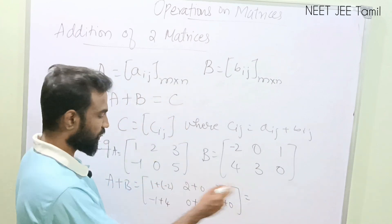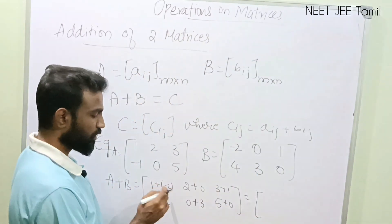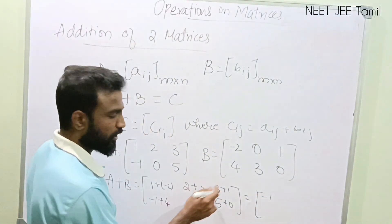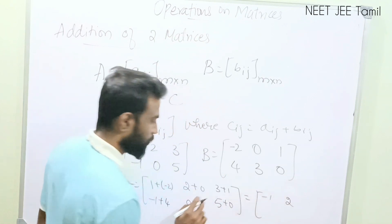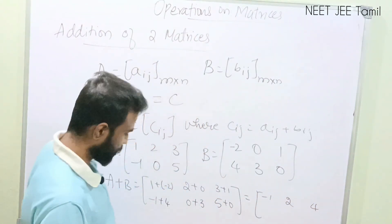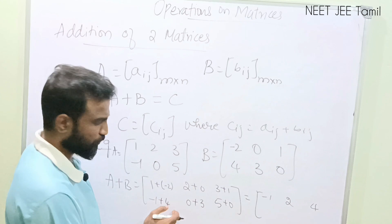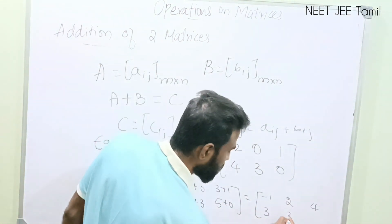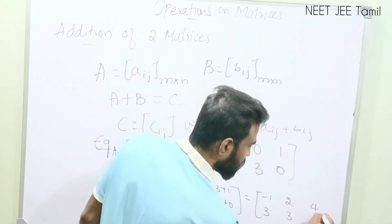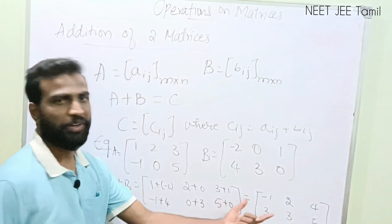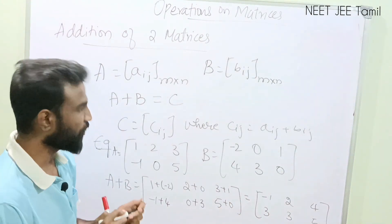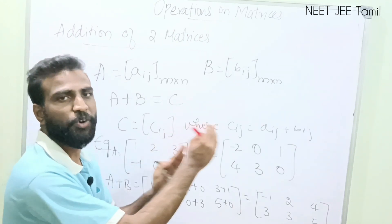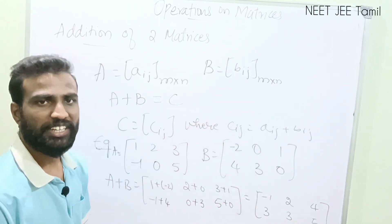When we add, we get a new matrix. 1 plus (-2) equals -1, 2 plus 0 is 2, 3 plus 1 is 4, -1 plus 4 becomes 3, 0 plus 3 is 3, and 5 plus 0 is 5. So the resulting matrix is [-1, 2, 4; 3, 3, 5]. Addition is simply adding corresponding elements, making sure both matrices are of the same order.